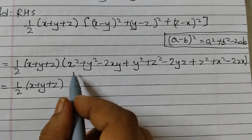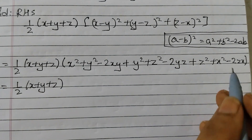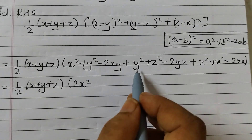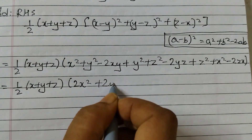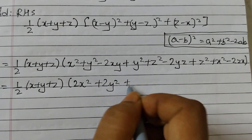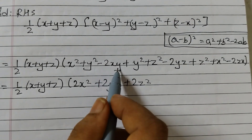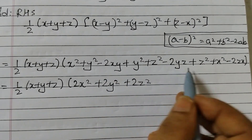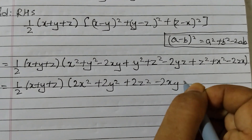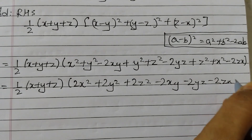And we will collect like terms — x squared and x squared combine. So that's 2x squared, y squared and y squared gives 2y squared, z squared gives 2z squared, and then minus 2xy minus 2yz minus 2zx.